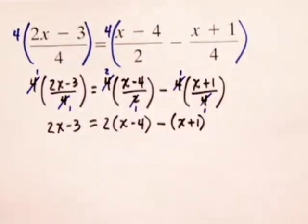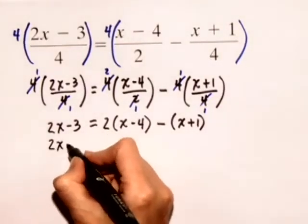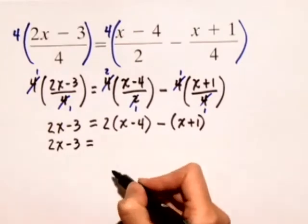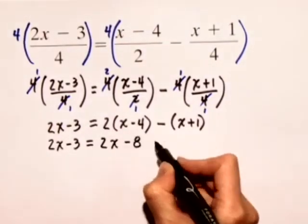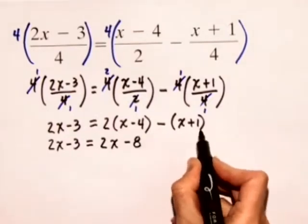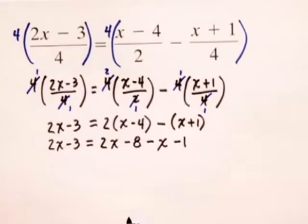Now we're ready to distribute through the parentheses. So we have on the left hand side, 2x minus 3 is equal to 2x minus 8, and when we distribute the negative through the last parentheses, we have minus x minus 1.